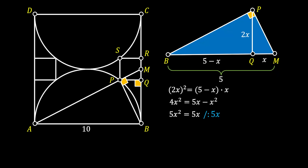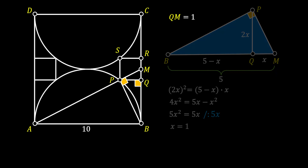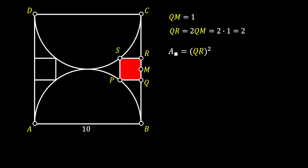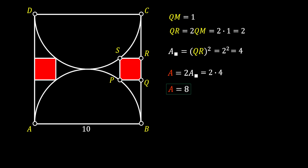Working through this, we get that 5X squared is equal to 5X. We can simplify both sides of the equation by 5X, since we know that X cannot be equal to 0, since it represents the half of the side of the square. So we get that X is actually equal to 1, which means that segment QM must have the length of 1. Since QM is equal to 1, the side QR of our small square is equal to 2 times QM, so the side of the small square equals 2. The area of this small square equals QR squared, which is 2 squared, which equals 4. And the combined area of those two squares is just 2 times 4, which equals 8. And this is our awesome solution.